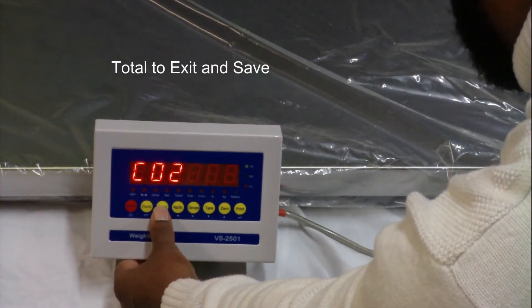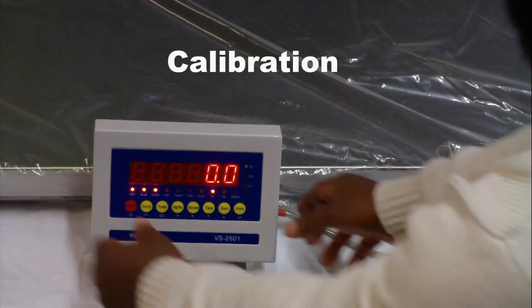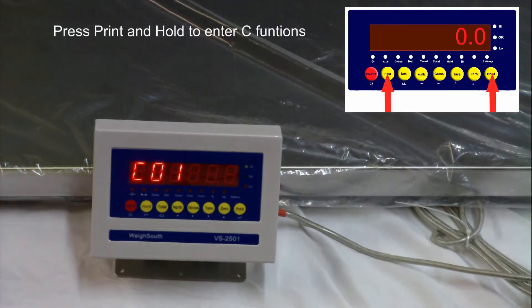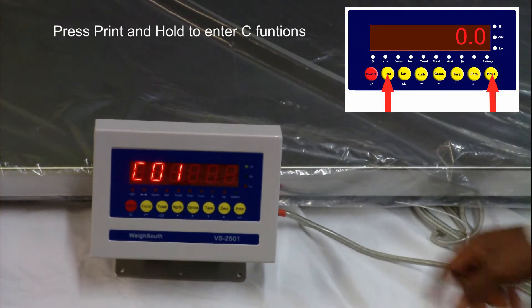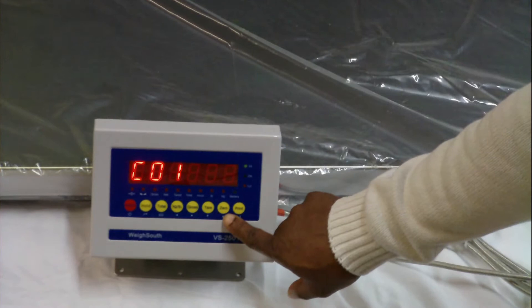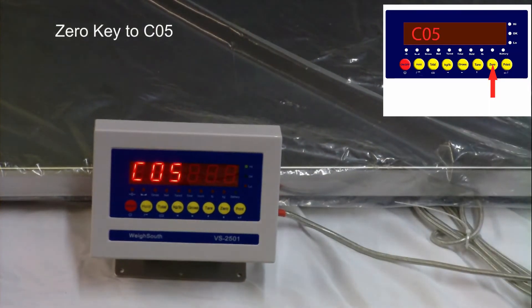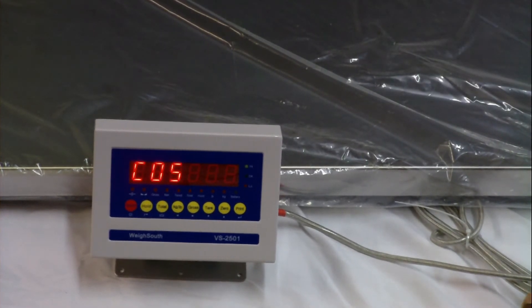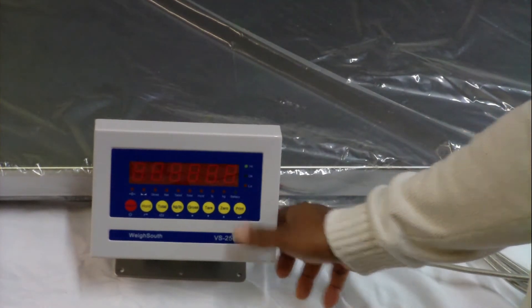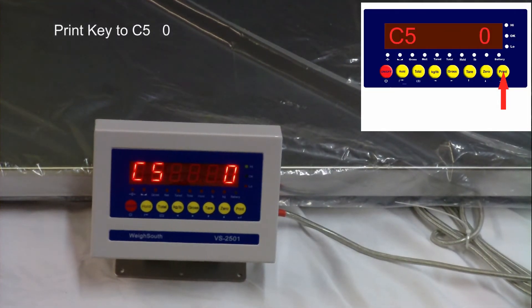For calibration, we will be using C function 5 and C function 6. Begin by entering the C functions of the 2501 as stated earlier. You need to enter the C submenu. Enter C05 submenu by pressing the print key. Your display will now show C5 0.